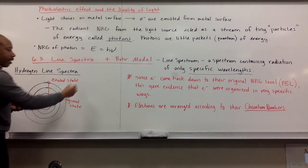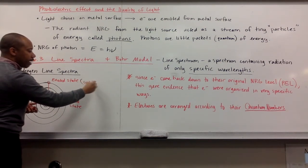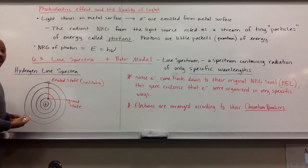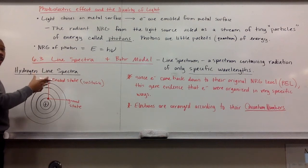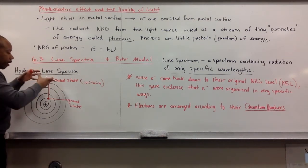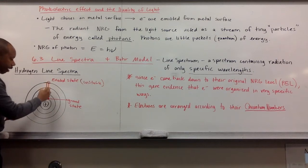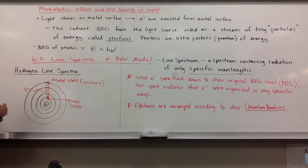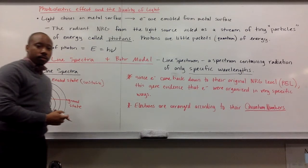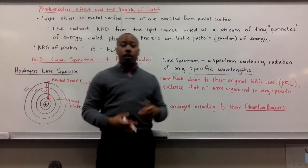But this excited state was unstable. So the electron came back down. The atom absorbed energy, as Planck hypothesized, and then released it. When it released that energy and the electron went back down to the ground state, it released electromagnetic radiation in the form of light.